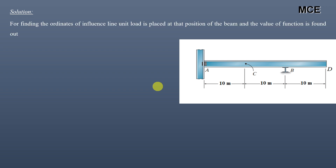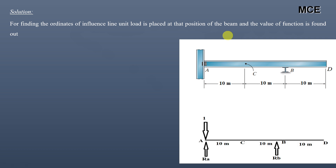To draw the influence line for moment, reaction, and shear for this beam, we will place the unit load at the position of the beam where we have to find the influence line value, and then find the value of the function. For finding the ordinates of the influence line, we place a unit load at that position and the value of the function is found out.